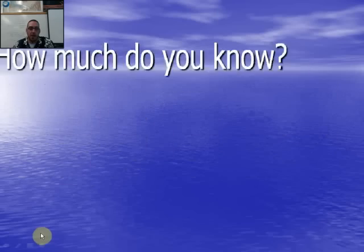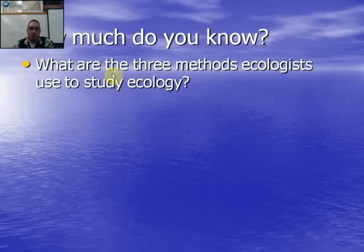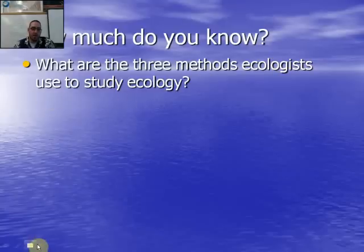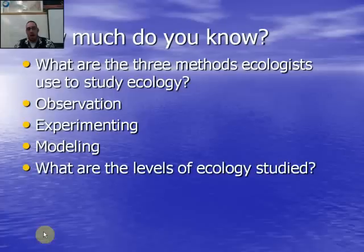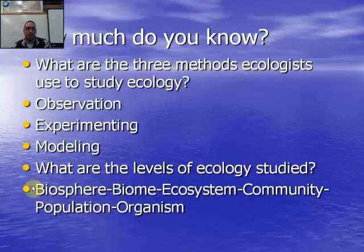Here are some review questions. First: what are the three methods ecologists use to study ecology? They are observation, experimenting, and modeling. Second: what are the levels of ecology studied, from largest to smallest? They are biosphere, biome, ecosystem, community, population, and organism. I hope that helps — thanks!